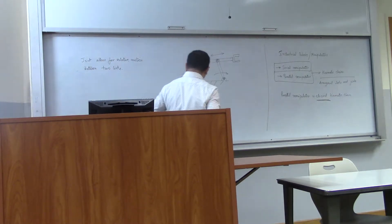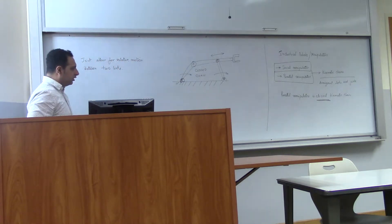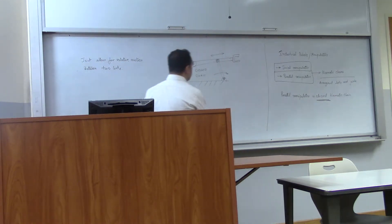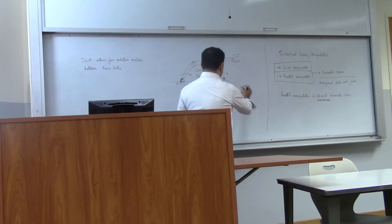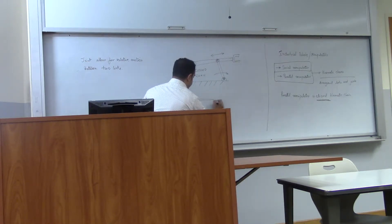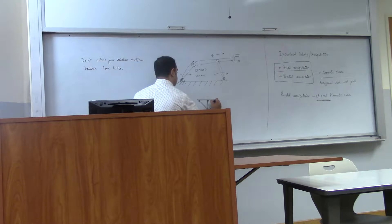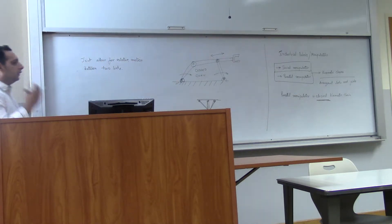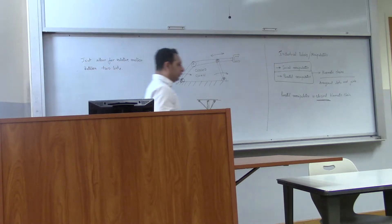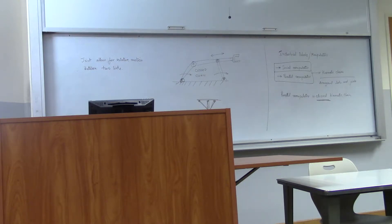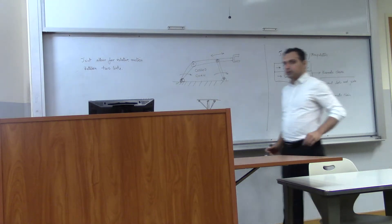Parallel manipulators are usually used when you need a lot of torque, a lot of force, or the payload is very high. Another type of parallel manipulator has many arms working cooperatively, forming a closed chain. So there can be different types of closed chains — the whole idea is it should form a closed loop. A joint allows for relative motion between two links.